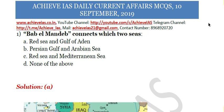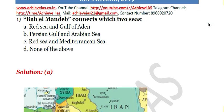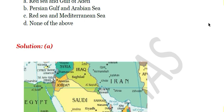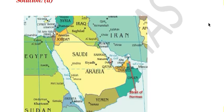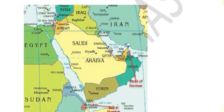Today is 10th September, so let's see the questions for today. The first question is: Bab al-Mandab connects which two seas? A) Red Sea and Gulf of Aden, B) Persian Gulf and Arabian Sea, C) Red Sea and Mediterranean Sea, D) None of the above. The answer is A. You can see the Red Sea and Bab al-Mandab in the photograph shown on screen.